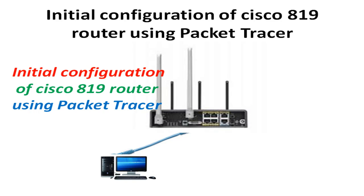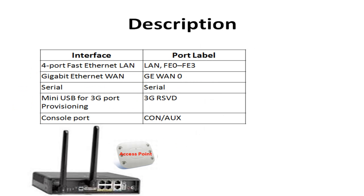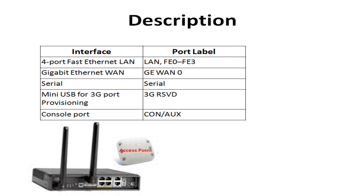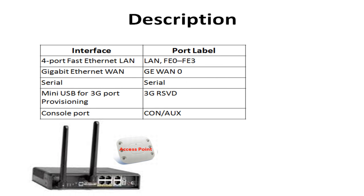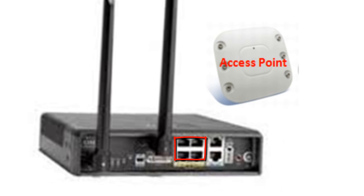Hello everybody, welcome to this video training. Today I'm going to show you how you can use the Cisco 819 router in Packet Tracer. First, let's take a look at the physical aspect of this router. The Cisco 819 is an ISR router — ISR stands for Integrated Service Router — meaning it has a lot of functionality built-in. This router has four LAN ports, a gigabit WAN port, a serial WAN port, and a console port.